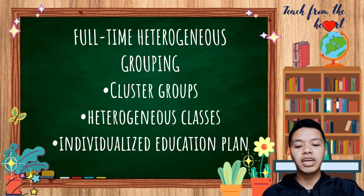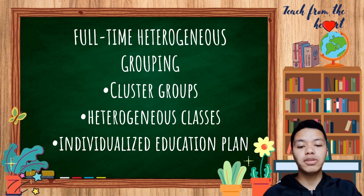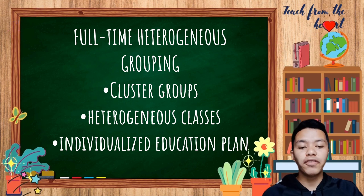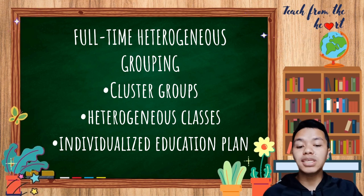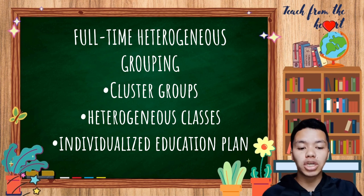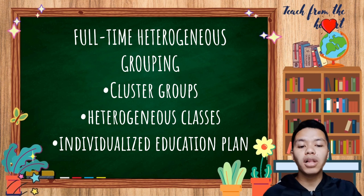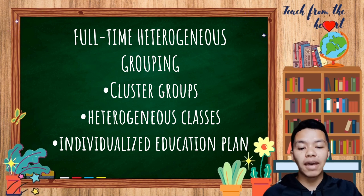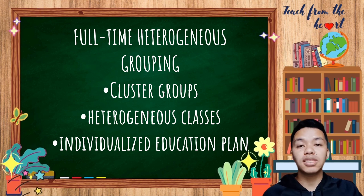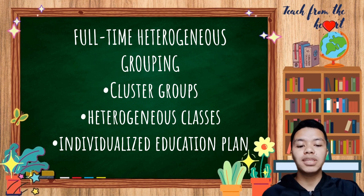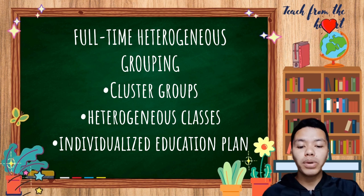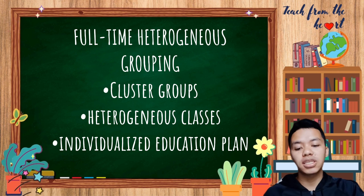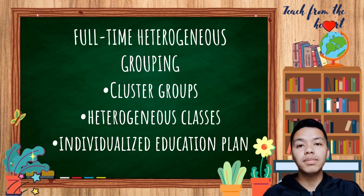In full-time heterogeneous grouping, we have cluster grouping, which refers to placing 5 to 10 high-ability students in one regular class per grade along with 15 to 20 regular students. This is handled by a trained professional teacher and can be divided into individual or small groups. Enrichment activities include in-depth lessons on content, metacognitive skills, collaboration, independent learning activities, research presentations, and mastery of advanced skills in math, music, and others. This type of grouping is not very common in the Philippines.